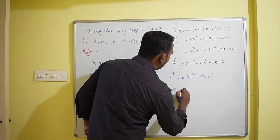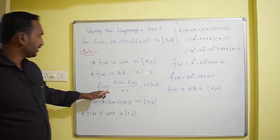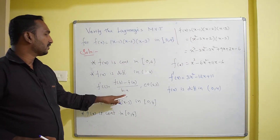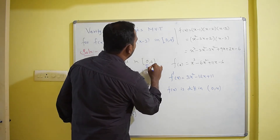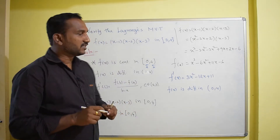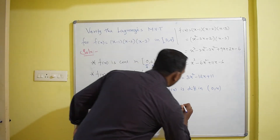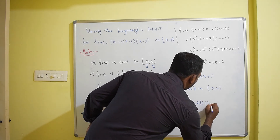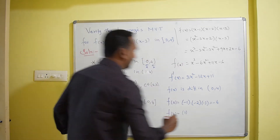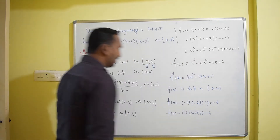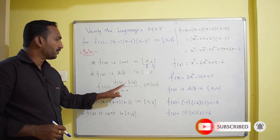So f(x) is differentiable on the open interval (0,4). Now we directly apply the condition f'(c) = [f(b) - f(a)] / (b - a). We need to find f(a) and f(b), where a = 0 and b = 4 — the endpoints of the given interval. f(0) = (-1)(-2)(-3) = -6, and f(4) = (3)(2)(1) = 6. Now we have all the values to substitute into the third condition.